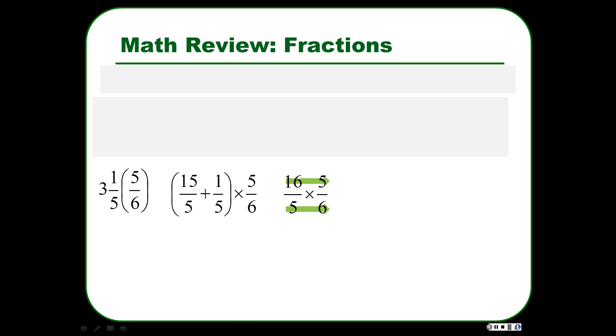That times 5 sixths. And the 15 fifths plus 1 fifth could just be 16 fifths. You can just write that that way, add 15 plus 1. And then multiplying fractions, just multiply across. 16 times 5 is 80. 5 times 6 is 30. Which is 8 over 3, which is 2 and 2 thirds, which is 2.67.